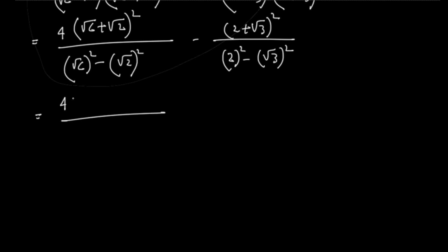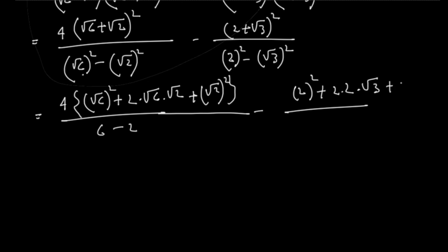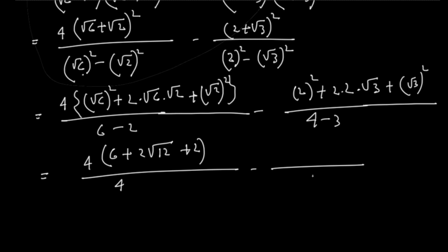Using the a squared minus b squared formula: a squared plus 2ab plus b squared. Root over 2 whole square. Root over 6 squared equals 6 and root over 2 squared equals 2. Then a squared plus 2ab plus b squared gives 4 into 6 plus 2 root over 12 plus 2, and 4 plus 4 root over 3.